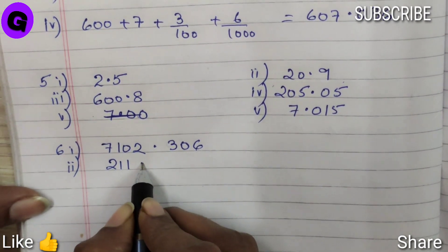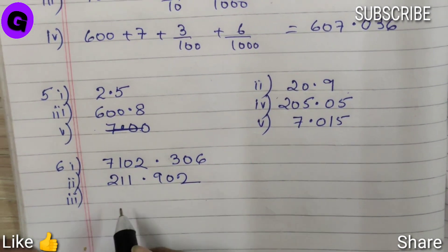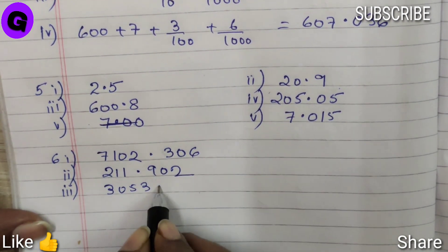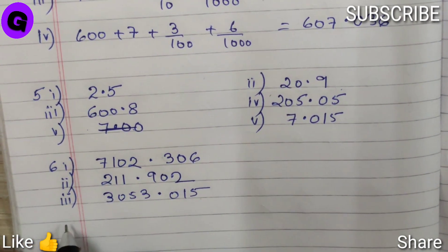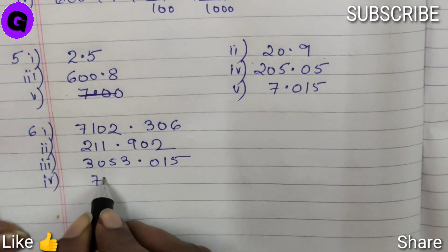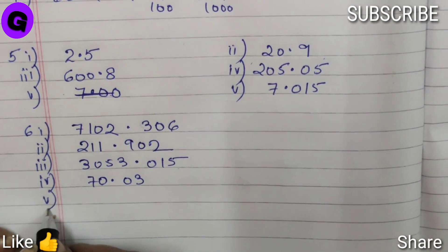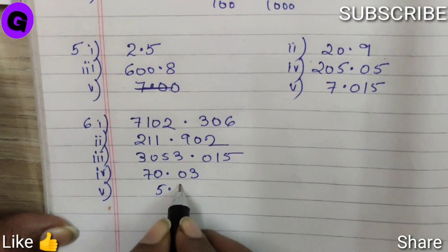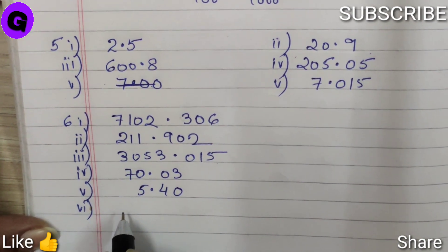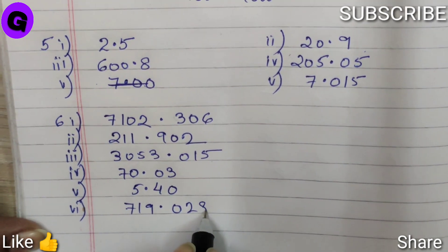Number 2, 211.902. Number 3 is 3053.015. Number 4, it is 70.03. Number 5, it is 5.40. Number 6, it is 719.028.